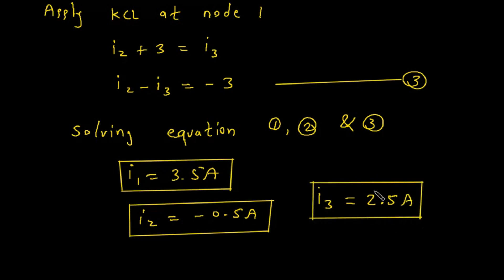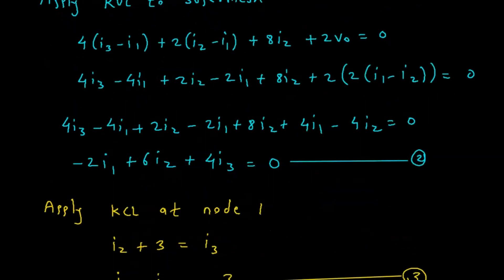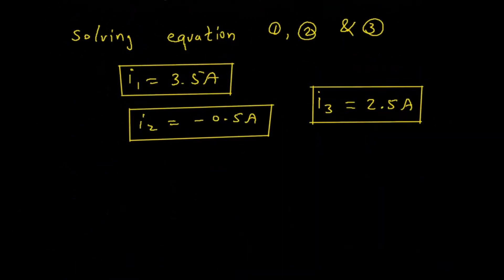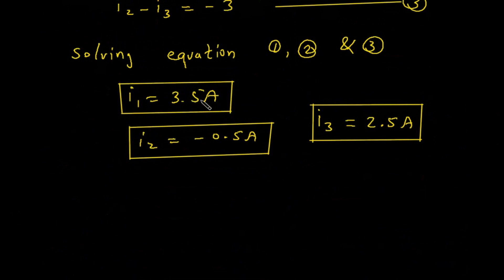What we had to find? We had to find I1, I2, and I3. So this is I1, this is I2, and this is I3. For electrical and electronics engineering related questions and answers, visit the link in the description below.